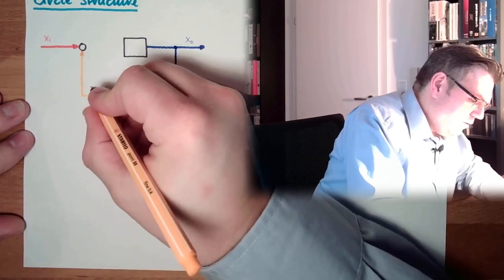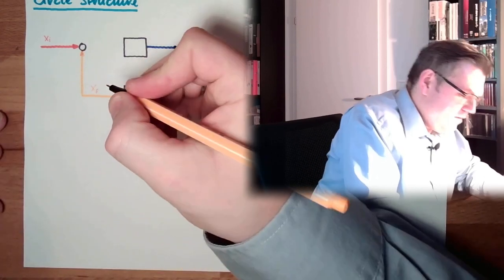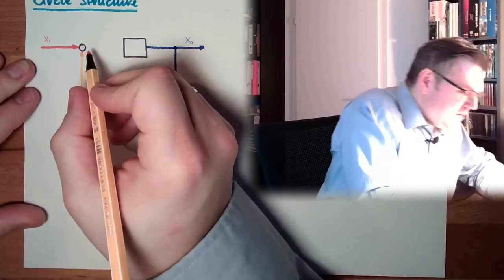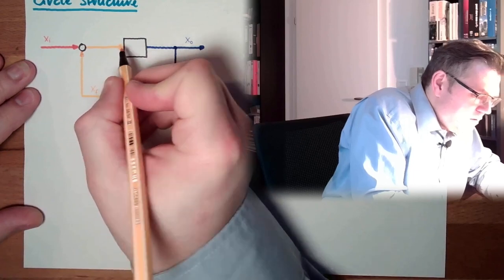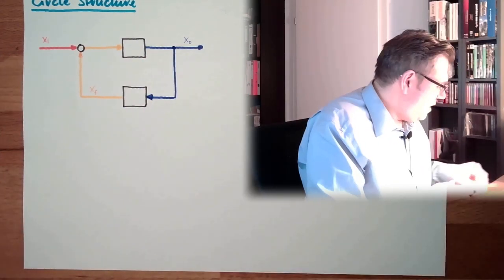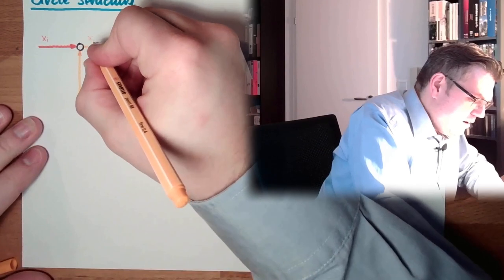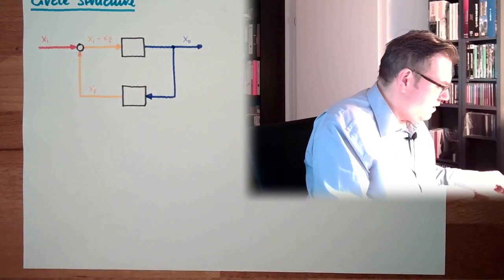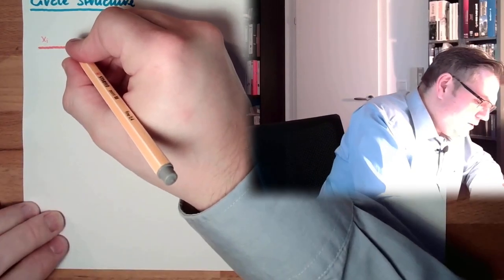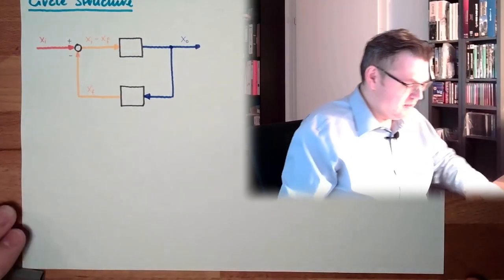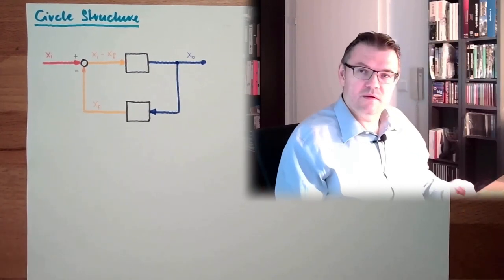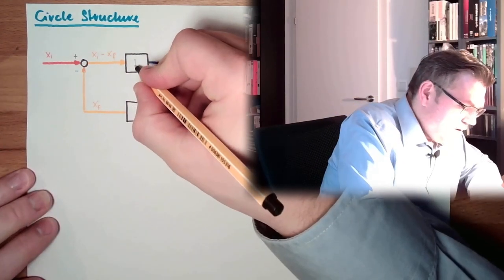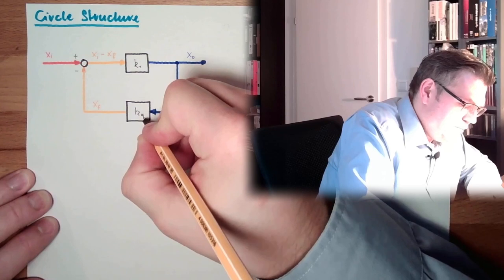I call this XF feedback. And the difference here we have XI minus XF. So here we have plus and here we usually have minus, so we have negative feedback. And here we have some gain factor called K1 and here we have KG in the backward loop.